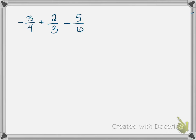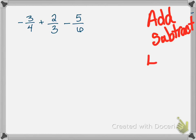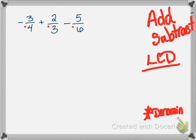Now we are going into addition and subtraction, so we have to change our thinking. Anytime we add and subtract rational expressions we need an LCD. To determine the LCD we focus on the denominators. I'm looking at 4, 3, and 6. I break each denominator into prime factors: 4 breaks down to 2 times 2; 3 is already prime; 6 breaks down to 2 and 3.